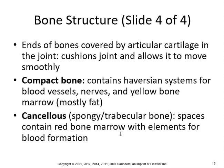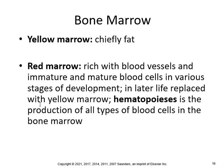Cancellous, or spongy trabecular, bone has spaces that contain red bone marrow with elements for blood formation. Red bone marrow is found in cancellous spongy bone, and yellow bone marrow is found in compact bone. Yellow marrow is chiefly fat, while red marrow is rich with blood vessels and immature and mature blood cells. In later life, red marrow is replaced with yellow marrow.